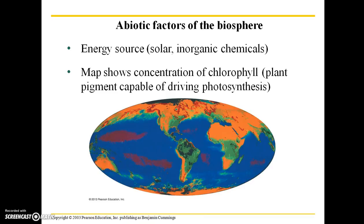I'm going to review the major abiotic factors of the biosphere. Energy source is either going to be solar or inorganic chemicals. Most areas on Earth are supplied with solar energy. The main ones that are not are deep sea trenches, far below where light can penetrate in the oceans — those ecosystems rely on chemicals found within deep sea vents.